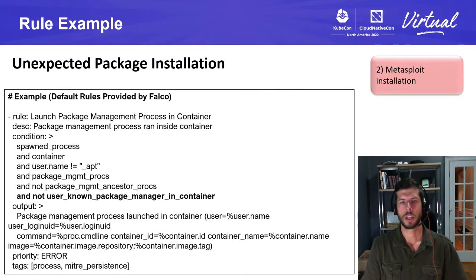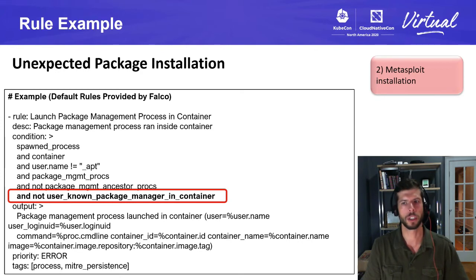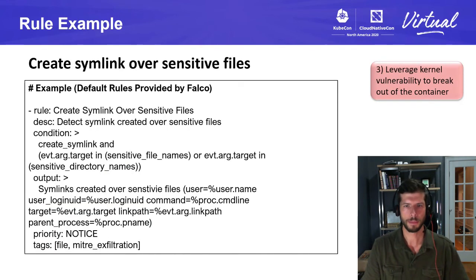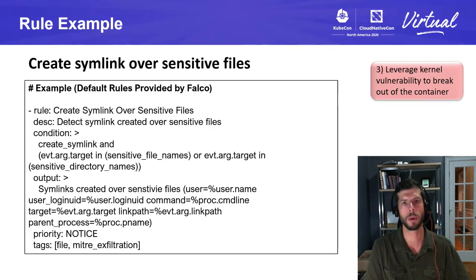For Metasploit installation detection, there's an unexpected package installation rule — this is a default rule provided by Falco. We can add a list of known package managers that are acceptable, but trigger on anything unexpected. If someone were to do an apt-get install on a Metasploit package and pull that down, we would get alerted. For stage three — leveraging a kernel vulnerability to break out of a container — one thing we can monitor is the creation of a symlink over sensitive files. If there was an exploit on the system, there could be file changes and symlinks to malware or other things that could be leveraged to break out of the container.